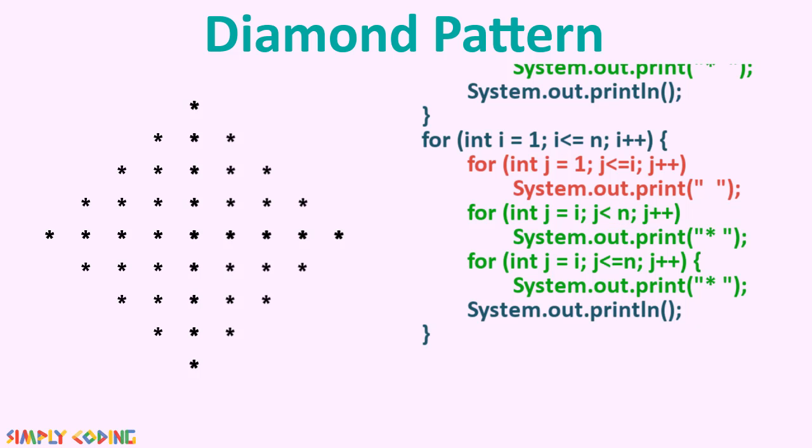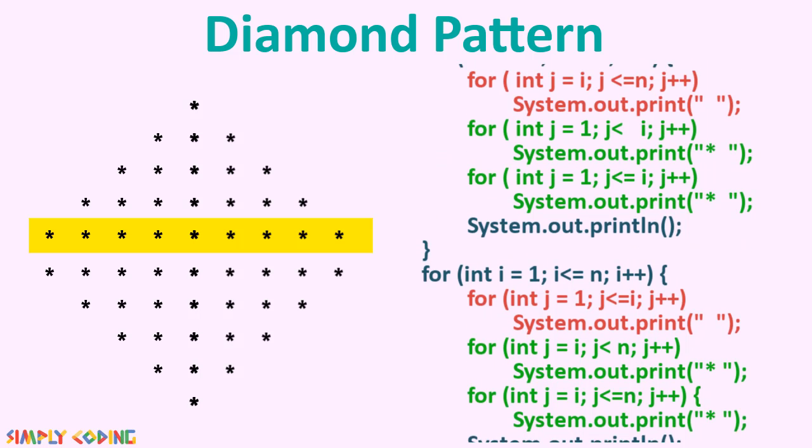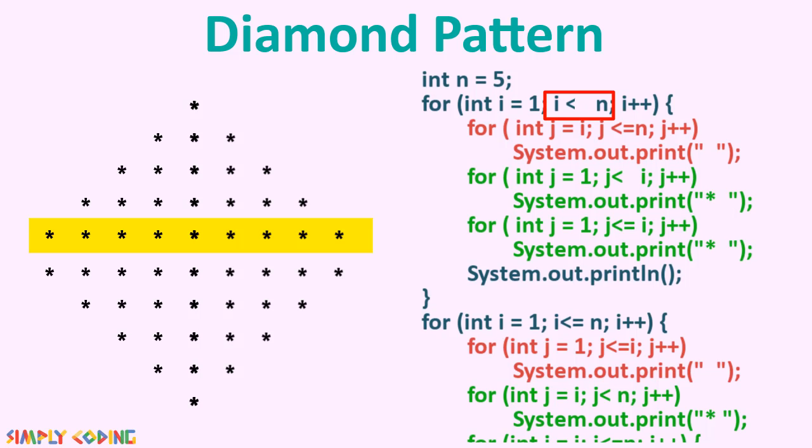Now when you run it, you will see that it's still not perfect as there are two rows in the center, so we do not have the pointy corners. We need to remove one row, so we will just remove the equal sign of the outer for loop which manages the rows to print one less row.